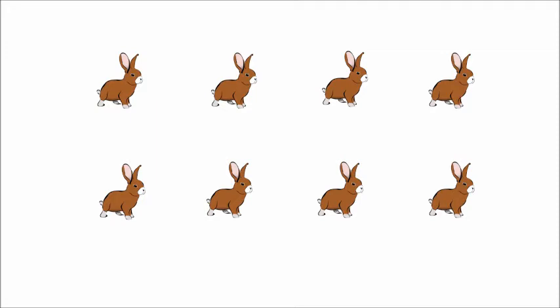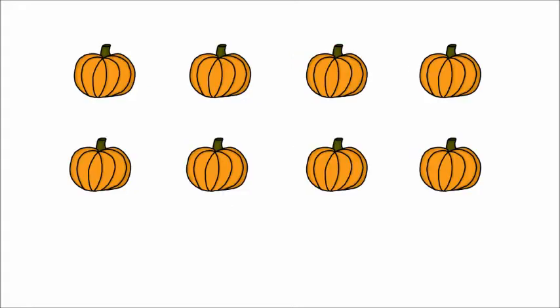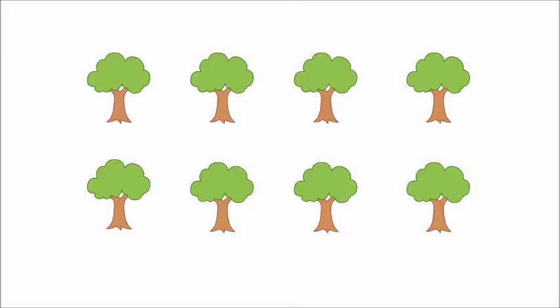There are eight rabbits. Here we can see eight butterflies. Around the pumpkins, we have eight pumpkins. And in the last picture we have eight trees.